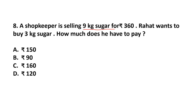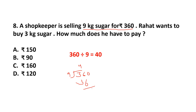The cost of 9 kg sugar is rupees 360. First, let's find the cost of 1 kg sugar: 360 divided by 9. You can work it out as 9 fours are 36, so 360 divided by 9 is 40. So 1 kg sugar is rupees 40. Rahat wants 3 kg, so 3 kg is 40 multiplied by 3, which is 120. Answer is option D, 120 rupees.